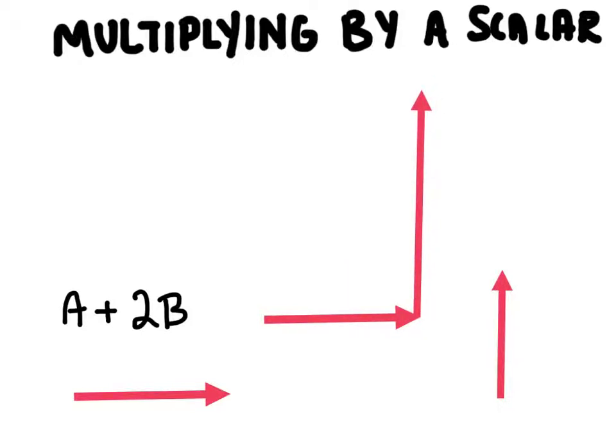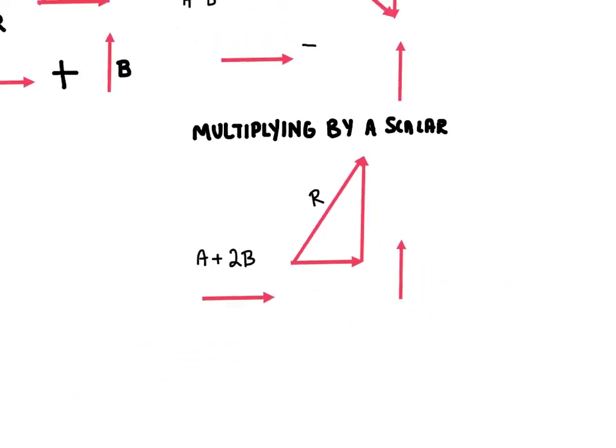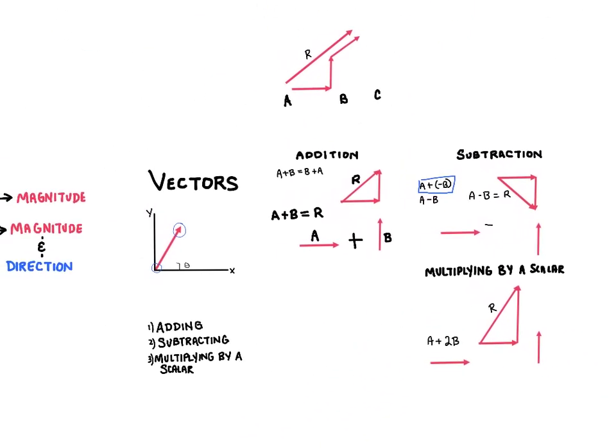And then we'll again go through the same procedure here of connecting the tail of the first vector to the tip of our final vector. And so this is our answer, our resultant there for a plus 2b. And so that is a brief introduction to vectors.